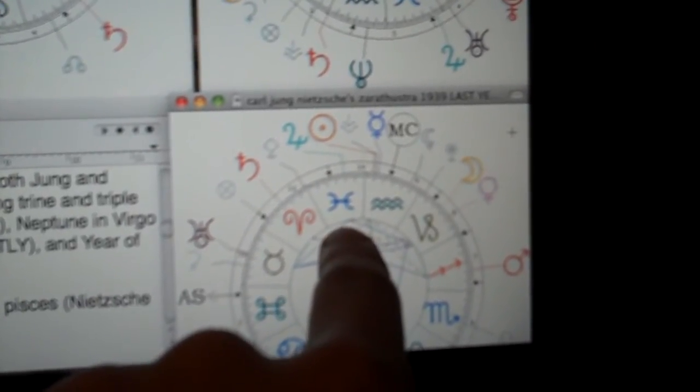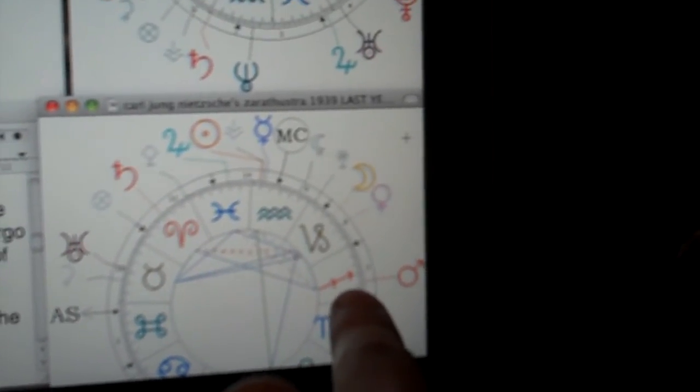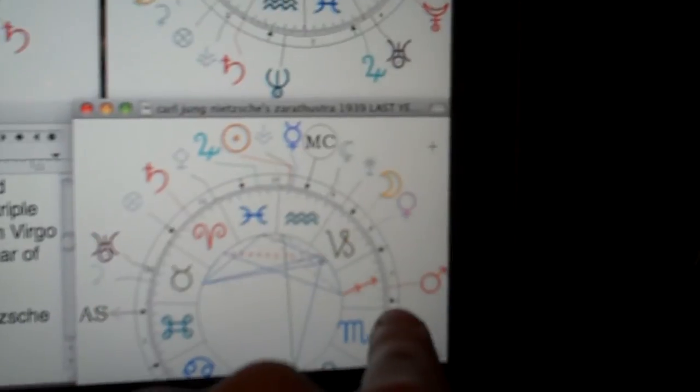Jupiter in Pisces means Nietzsche's having a Jupiter return, and Mars in Sagittarius means Jung's having a Mars return, because that's what he was born with.